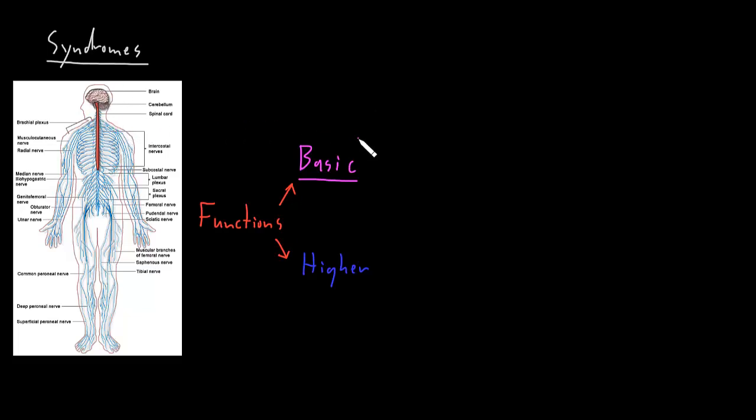I like to divide up the basic functions of the nervous system into three big categories. The first category I would call motor. The word motor in this context refers to control of skeletal muscle, the main muscle we have that's all over our body and attached to our skeleton. By controlling skeletal muscle,